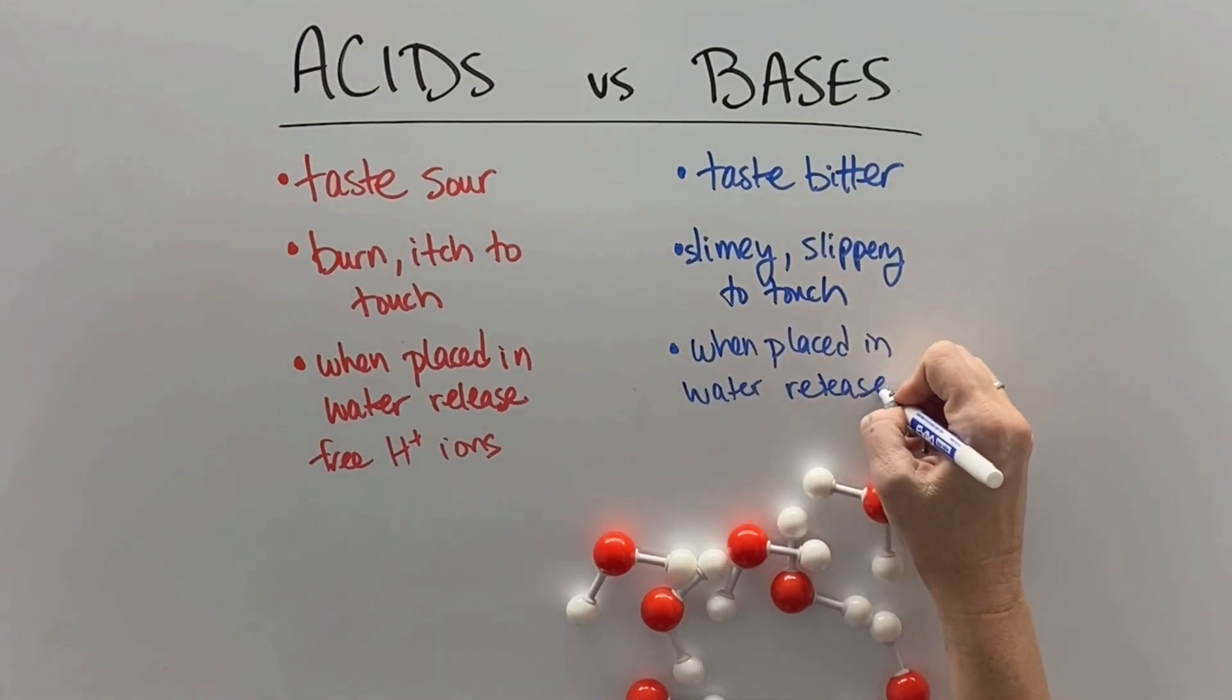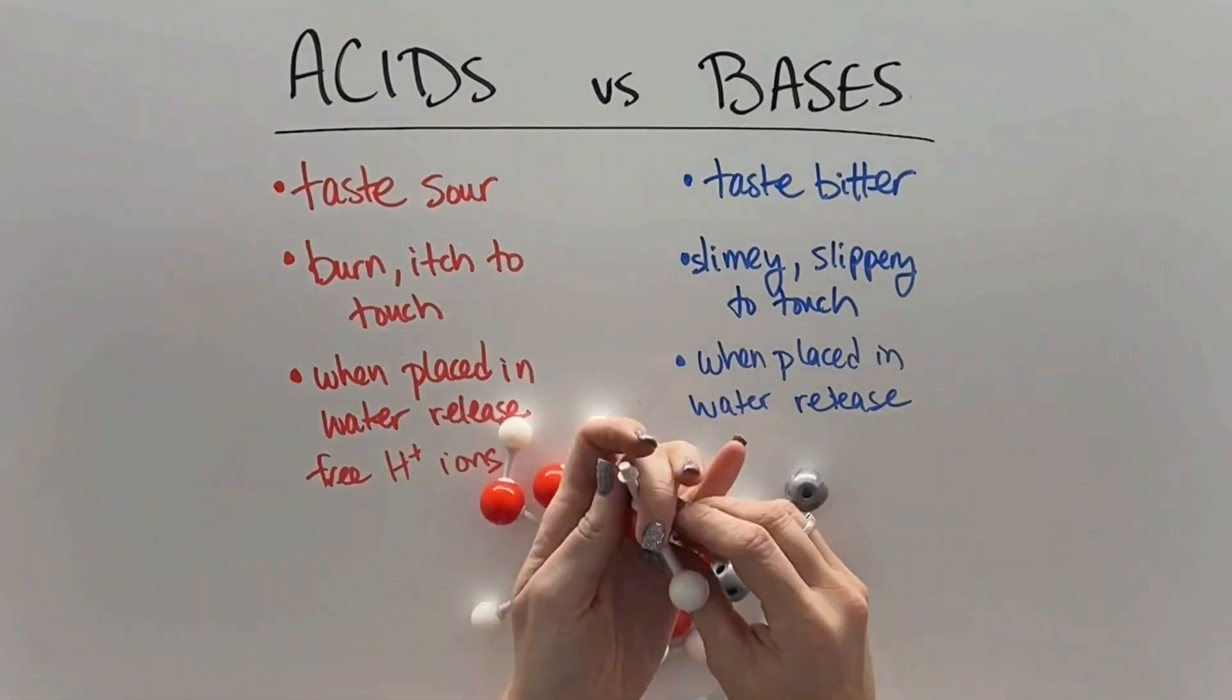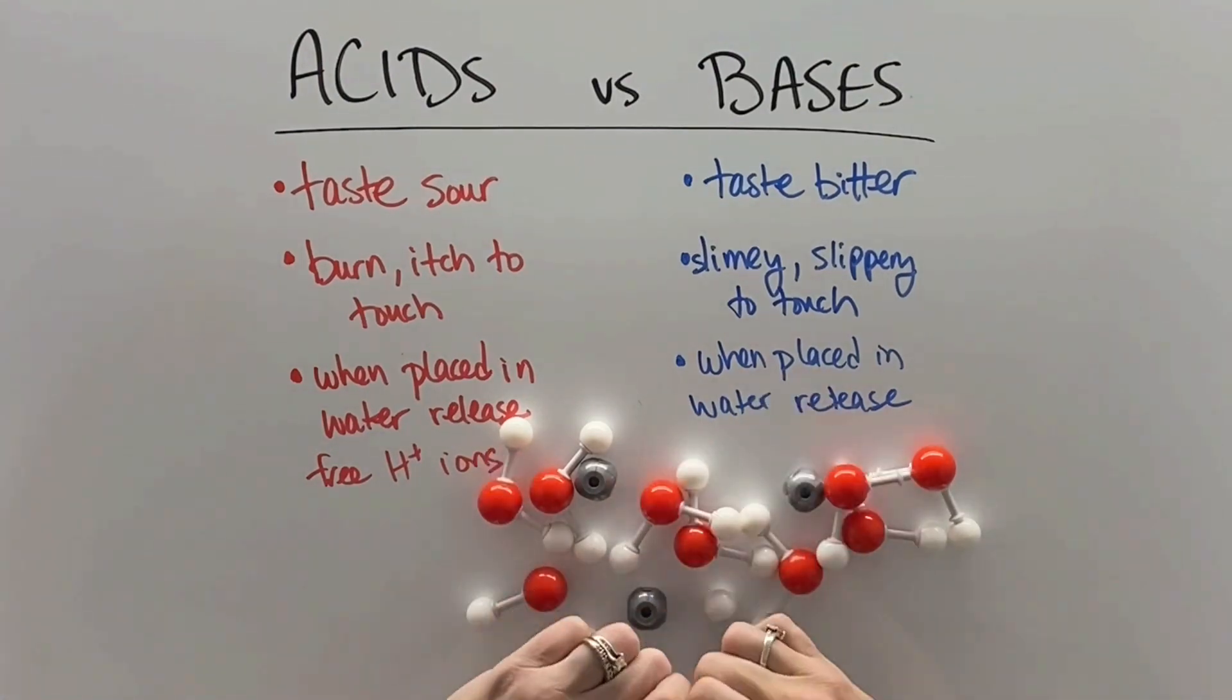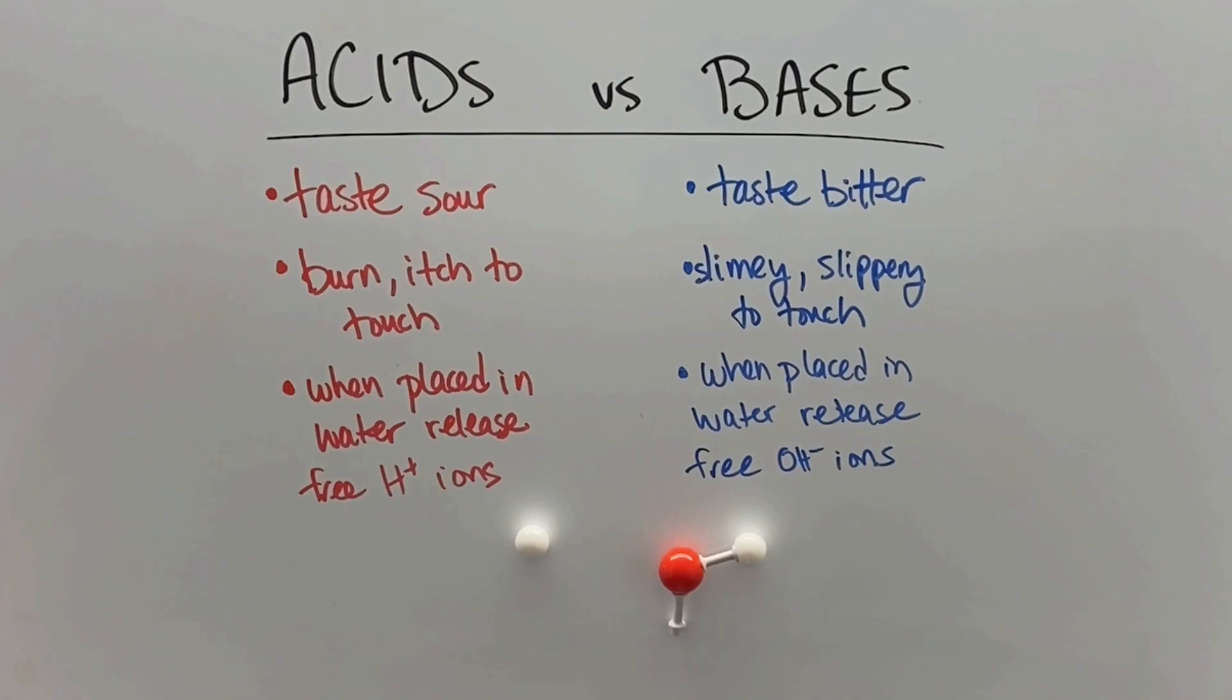Bases, on the other hand, are a different type of chemical, and when we place them in the water, they are going to release a totally different thing. So here we have some sodium hydroxide. When we place them in the water, the sodium detaches from the hydroxide, and it releases these free OH ions called hydroxides.